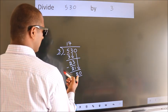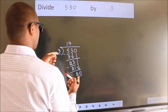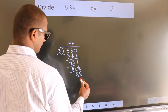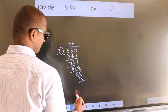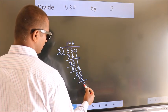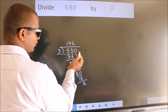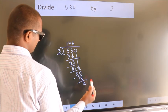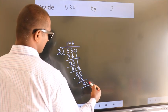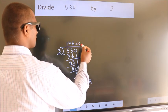A number close to 20 in the 3 table is 3 sixes, which is 18. Now we subtract. We get 2. No more numbers to bring down, so we stop here. This is our remainder. This is our quotient.